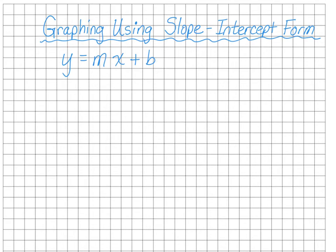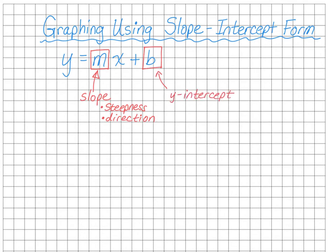The y is always going to stay as a y, and the x is always going to stay as an x. The things that change are where you're going to have numbers put in — a number for m and a number for b. The number that goes in for m is your slope, which tells you the steepness of the line as well as the direction. The b is the y-intercept, which tells you where the line crosses the y-axis. This is called slope-intercept form because it tells you the slope and the y-intercept of the line.